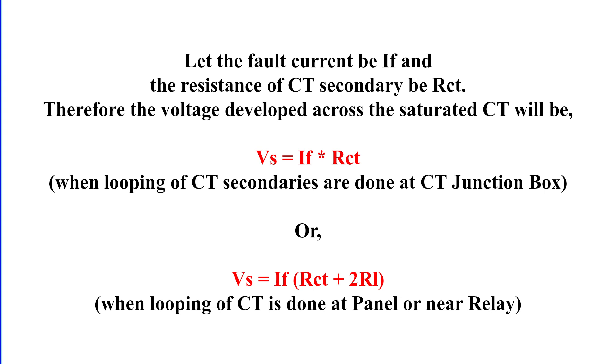This difference arises because paralleling can be done either at the CT junction box or at the panel. If paralleling is done at the CT junction box, then only the CT's secondary resistance matters. However, if paralleling is done at the relay panel, we must also account for the lead resistance from the CT to the panel.